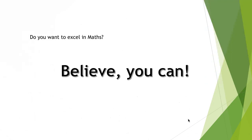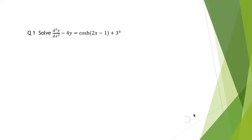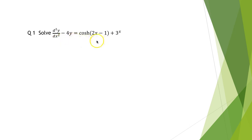Do you want to excel in maths? Believe you can — that is the first step to success. Coming to the problems: solve d²y/dx² − 4y = cosh(2x) − 1 + 3^x.